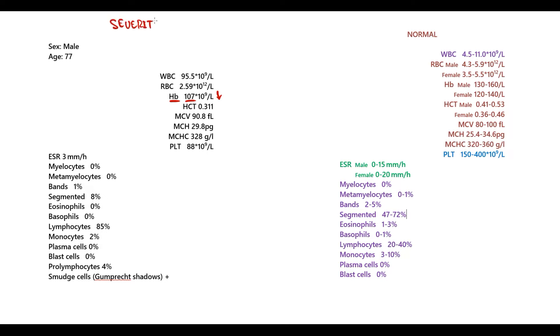To tell severity, we need to know two numbers: 110 and 80. Normal hemoglobin for males is 130-160, for females 120-140. From 110 to lower limit of normal is mild anemia, from 80 to 110 is moderate anemia, and lower than 80 is severe anemia. In this case, hemoglobin is 107, so it's moderate anemia.